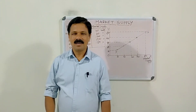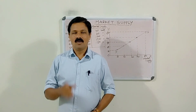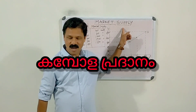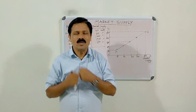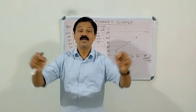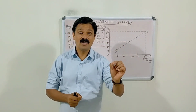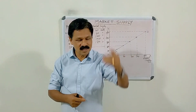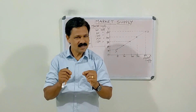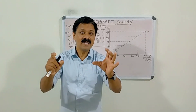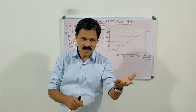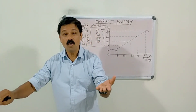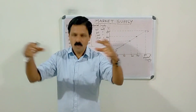Welcome back. In this video, we will discuss about Market Supply. We all know that supply refers to a large quantity of a commodity that will be supplied at a higher price than at a lower price. That is, there is a direct relationship between the price and the quantity supplied, or the quantity which is offered for sale by the producers or by the sellers.